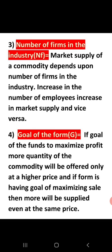Number four: goal of the firm. Any firm enters the market with essentially two goals: one is profit maximization and one is social welfare. If a firm has the goal of profit maximization, then more will be supplied at a higher price. If the firm has the goal of social welfare, then more will be supplied even at a lower price.